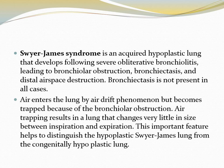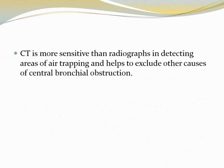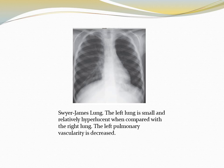Bronchiectasis is not present in all cases of Swyer-James syndrome. Air enters the lung by the air drift phenomenon but becomes trapped because of the bronchiolar obstruction. Air trapping results in a lung that changes very little in size between inspiration and expiration. This important feature helps to distinguish the hypoplastic Swyer-James lung from the congenitally hypoplastic lung. CT is more sensitive than radiographs in detecting areas of air trapping. In this case, there is a small, relatively hyperlucent left lung with decreased left pulmonary vascularity. In Swyer-James syndrome there is decreased volume and increased lucency.